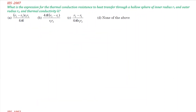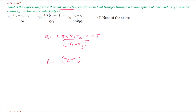Next question: what is the expression for thermal conduction resistance of a hollow sphere with inner radius R1, outer radius R2, and thermal conductivity K? The heat transfer equation is Q = 4πK × R1 × R2 × ΔT / (R2 - R1). So the thermal conduction resistance equals (R2 - R1) / (4πK × R1 × R2). The formula is very simple and direct.